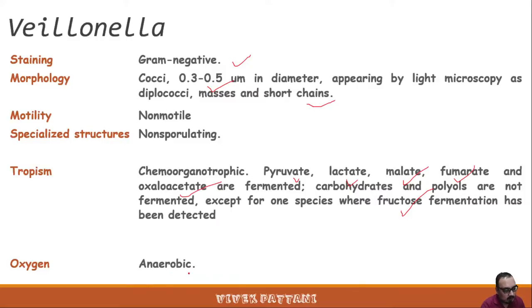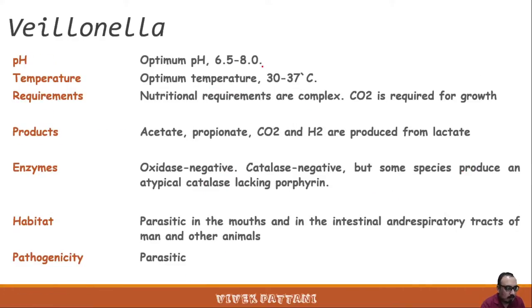Veillonella is also an anaerobic coccus with a pH optimum around 6.5 to 8 and an optimum temperature requirement of 30 to 37 degrees Celsius. Nutritional requirements are complex and carbon dioxide is required for growth. Products produced are acetate, propionate, carbon dioxide, and hydrogen from lactate.